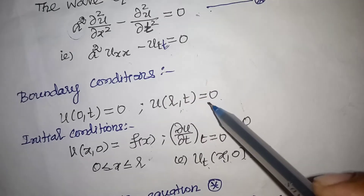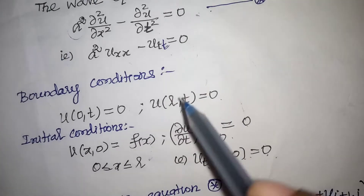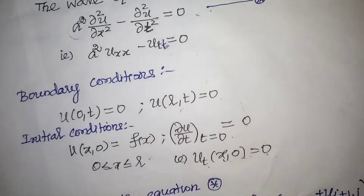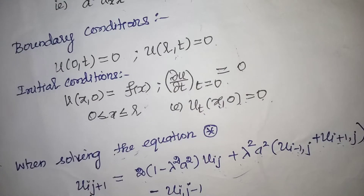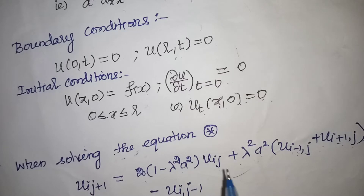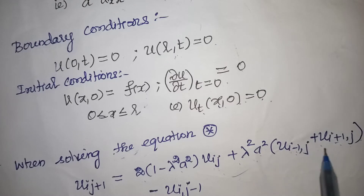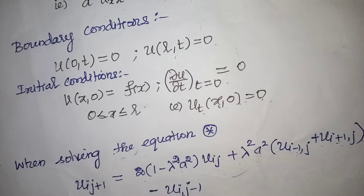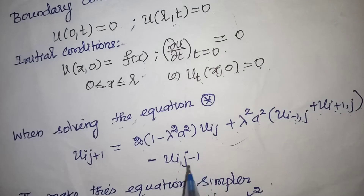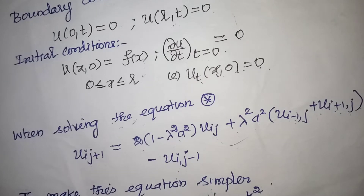Solving with those conditions, we get the algorithm: u(i, j+1) = 2(1 − λ²a²)·u(i,j) + λ²a²·[u(i−1,j) + u(i+1,j)] − u(i, j−1). To simplify this equation, we select λ² = 1/a².